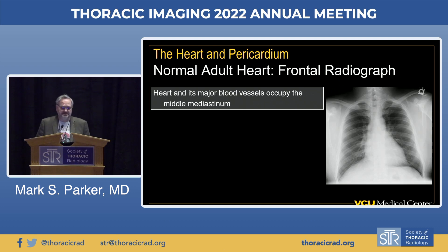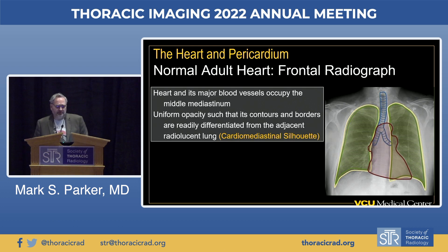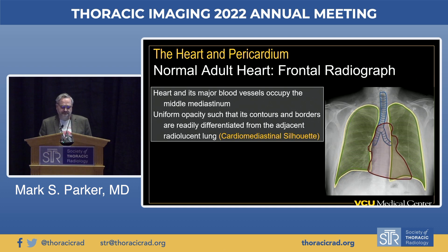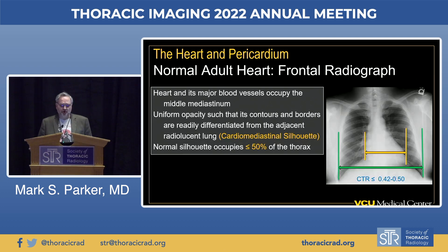The heart and its major blood vessels occupy the middle mediastinal compartment in the central portion of the thoracic cavity. It creates a uniform opacity such that its contours and borders are readily differentiated from the adjacent radiolucent lung. We refer to this radiopacity as the cardiomediastinal silhouette. We look at its size relative to the rest of the thorax—this is referred to as the cardiothoracic ratio.